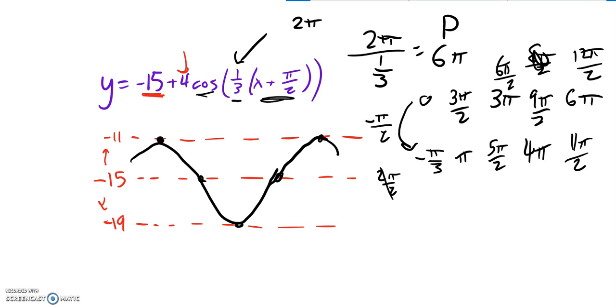So this first point then would be negative pi over 3, negative 11. This x value with that height. And then this point right here will be pi, negative 15. This one will be 5 pi over 2, negative 19.